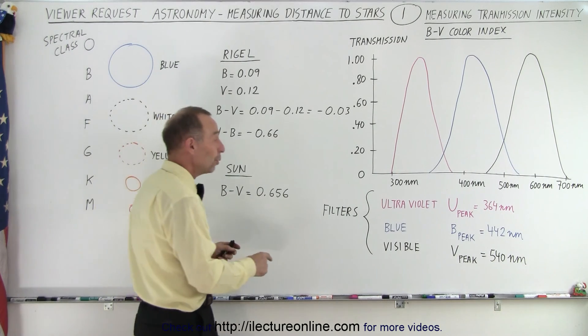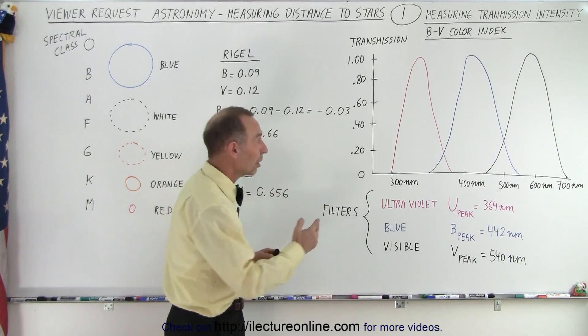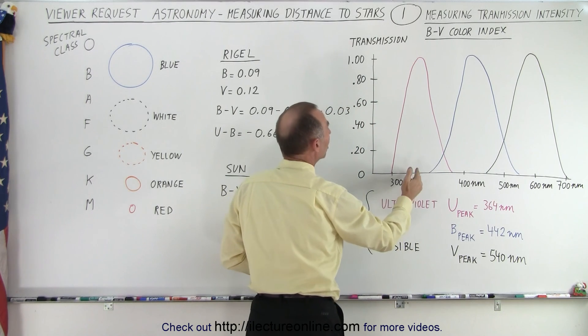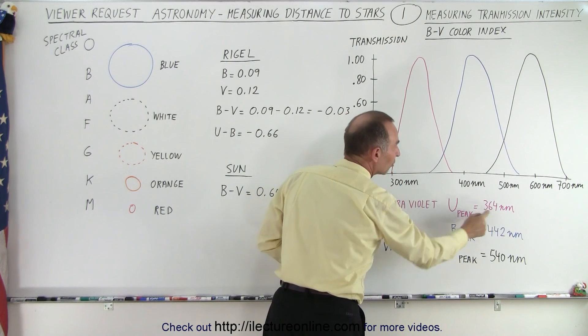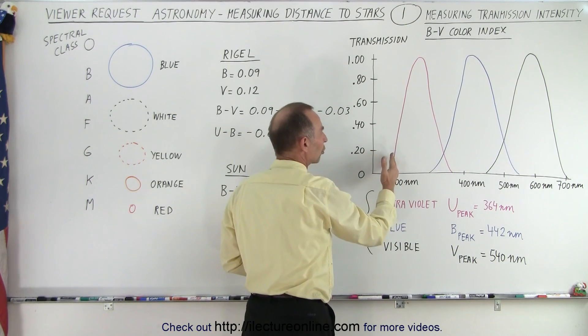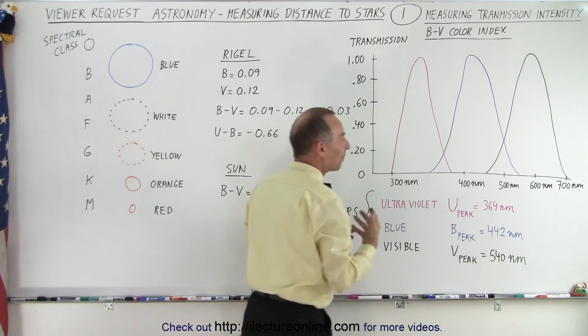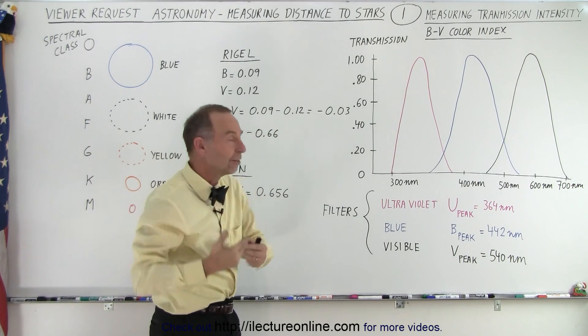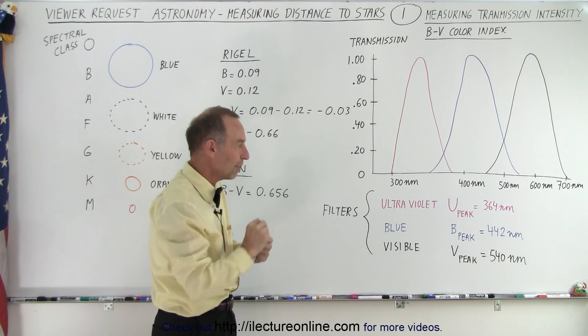The main filters that we use are an ultraviolet filter, a blue filter and a visible filter. And here are the transmission curves. In other words, the ultraviolet filter will allow a hundred percent of the light through at a wavelength of 364 nanometers. Any wavelengths that are shorter than that, less transmission occurs through that filter. And any wavelengths greater than that, less transmission happens through that filter.